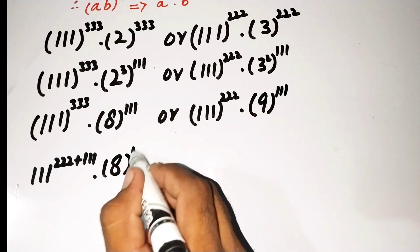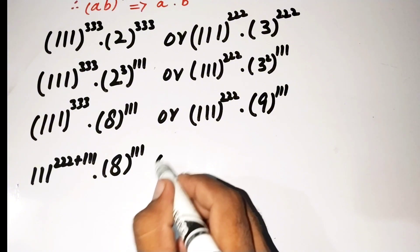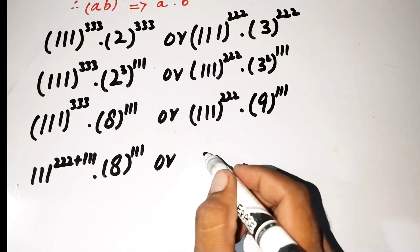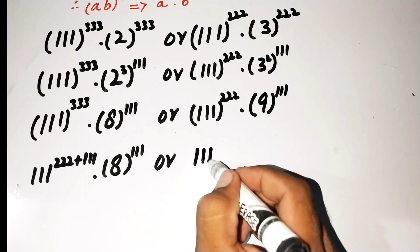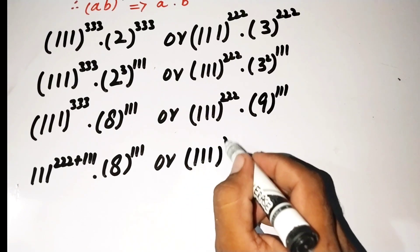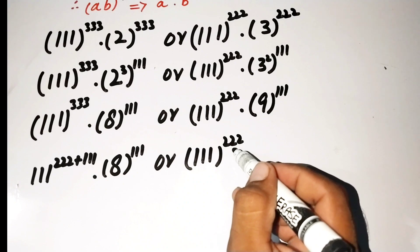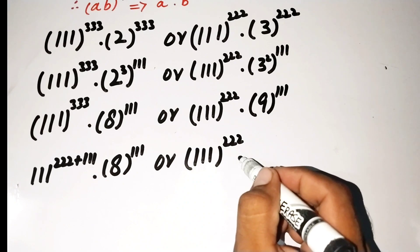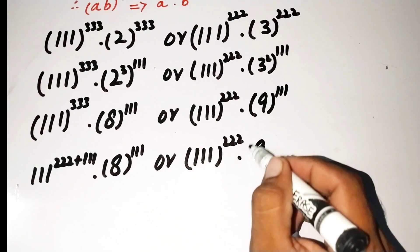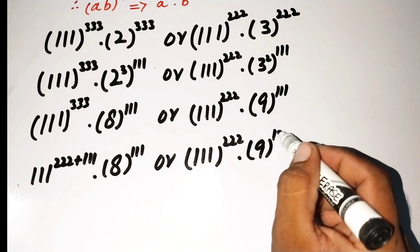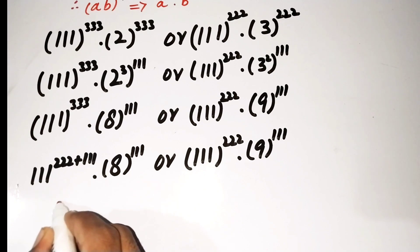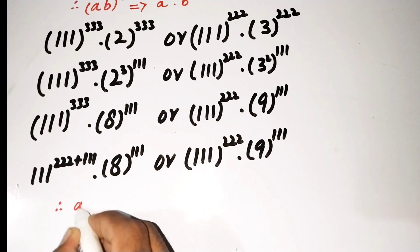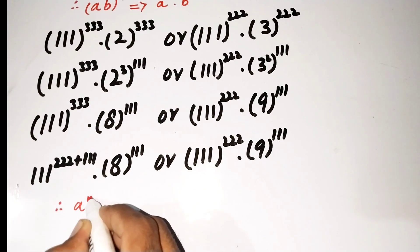This gives us 111^222 times 8^222 times 8^111 on the left side, using the exponential rule a^(m+n) = a^m × a^n.